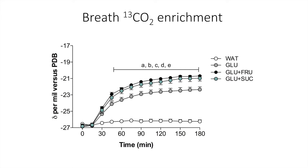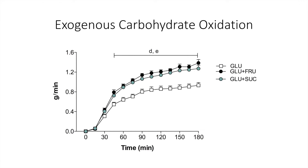So from this data you can calculate how much grams of your sports drink you are actually burning. And that is shown in this figure. The first thing you'll see is that the water group has disappeared — this is because the water group doesn't have any carbohydrates, so obviously you cannot burn any carbohydrates if there aren't any in the treatment. The value from the water group is used as a background correction for the values in this figure. And you see that the glucose-only group burns about one gram of sports drink per minute, while if you have a combination of sugars, you can burn approximately 40% more of your sports drink.